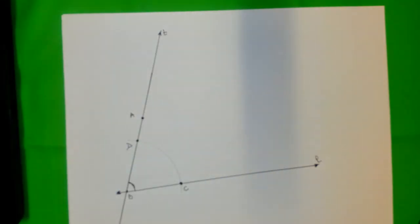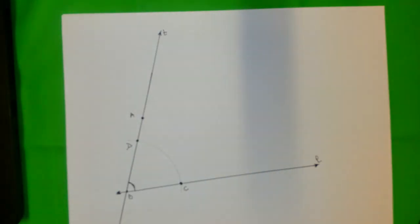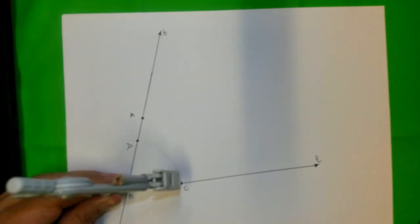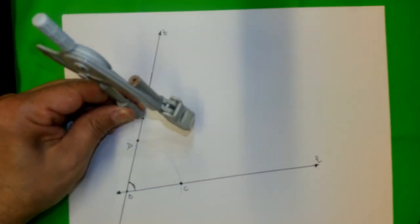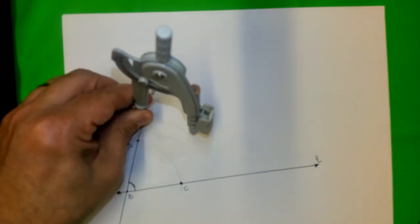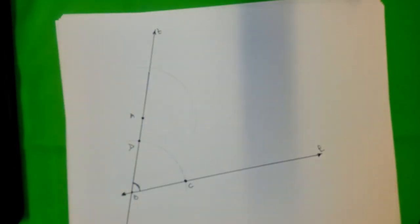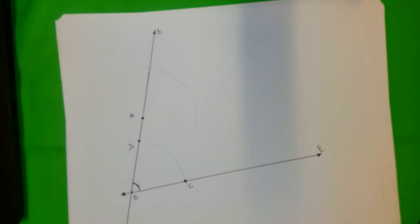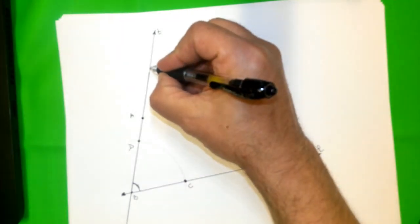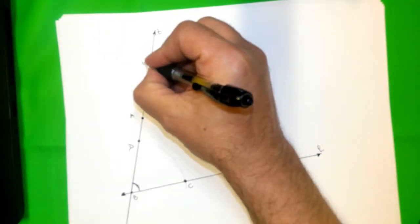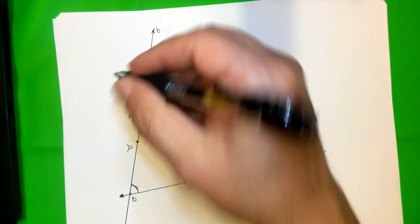Okay, so now I'm going to use the same opening. Remember, same opening. I'm going to go in point A and I'm going to draw a big, big arc. Okay, and now I'm going to mark this point here. I'm going to call it point E. This point E is the corresponding point of point D.